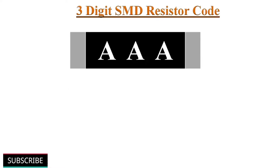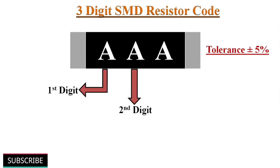The first type of coding scheme is the 3-digit SMD resistor coding scheme. These resistors have a standard tolerance of plus or minus 5%. As the name states, 3 digits are used to define the resistance value. The first 2 digits indicate the 2-digit numerical resistance value, and the last digit gives a multiplier — the power of 10 by which to multiply. This is the same as color band resistors, except actual numbers are used instead of colors.